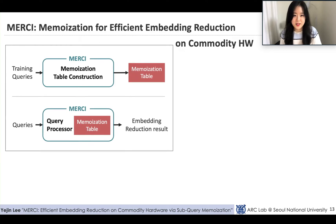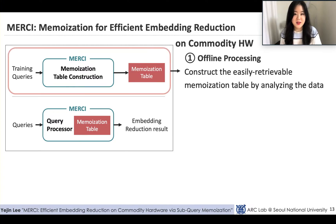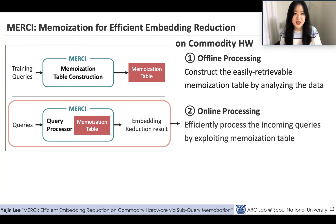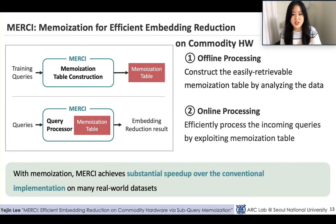So we present MERCI, a lightweight memoization framework for efficient embedding reduction on commodity hardware. First, by analyzing patterns in training queries, MERCI constructs a memoization table. Then, utilizing this memoization table, MERCI can efficiently process incoming embedding reduction operations. With memoization, MERCI achieves substantial speedup over the conventional implementation on many real-world datasets.